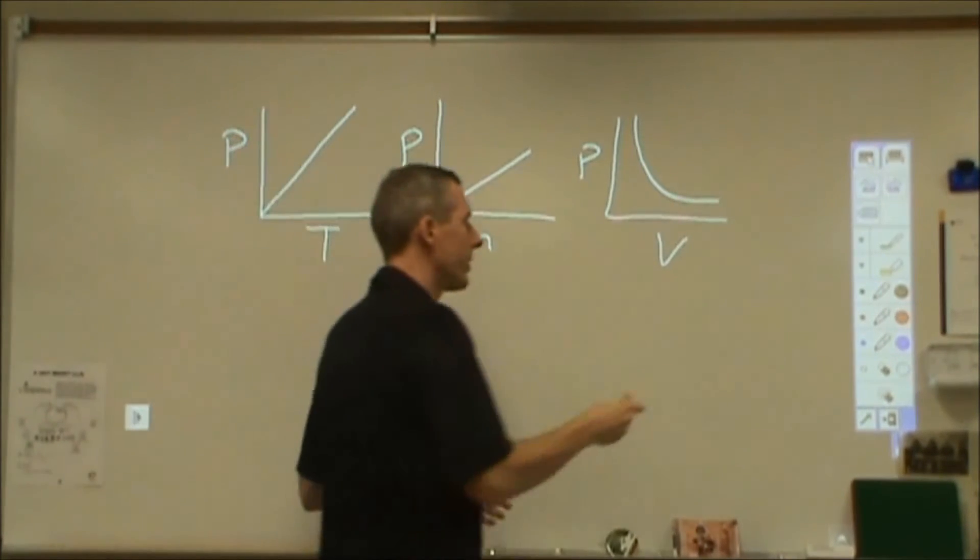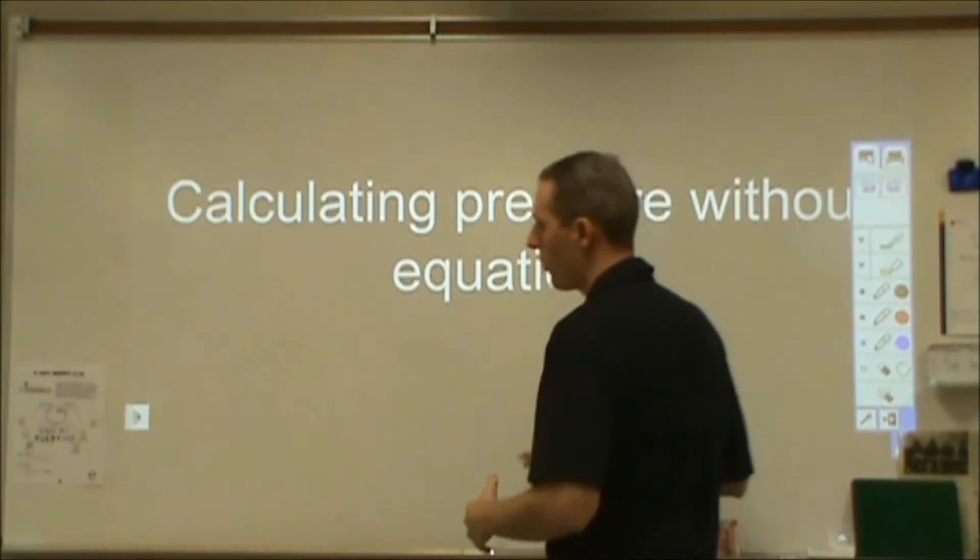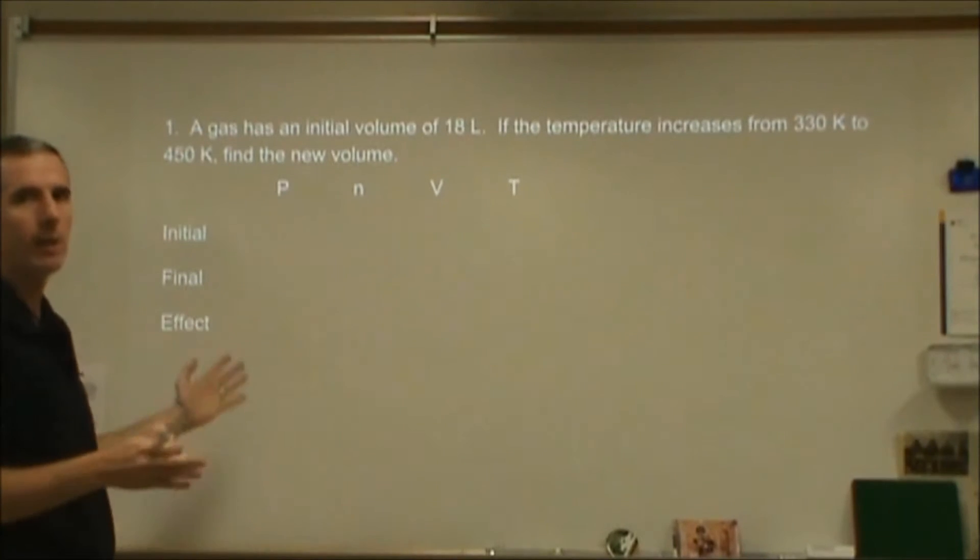So what we can do is we can do a problem. We can analyze how this will affect the particular thing. So here's how you would set this up. We have a gas law problem. Initial volume of 18 liters. Temperature goes from 330 to 450. Find the new volume.